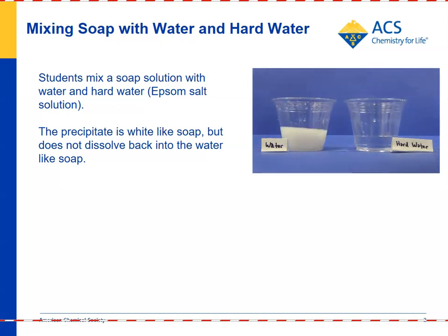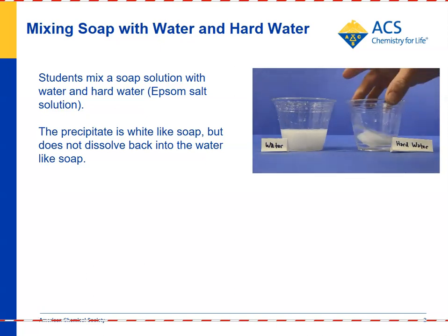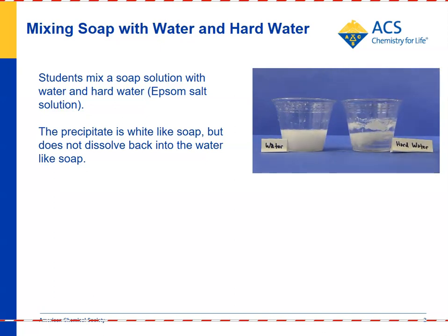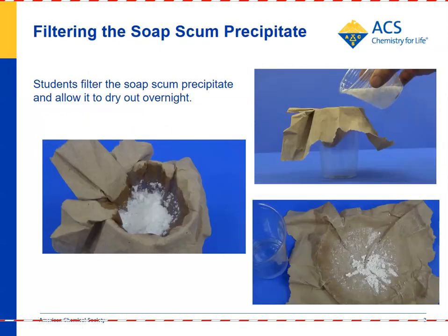When they put the soap solution into hard water, which is an Epsom salt solution, they'll see that it doesn't mix in nearly as well as it did with regular water — it creates a precipitate or a soap scum. After the kids do that, they pour the soap solution through a brown paper towel and allow the liquid to filter through, leaving the soap scum behind.